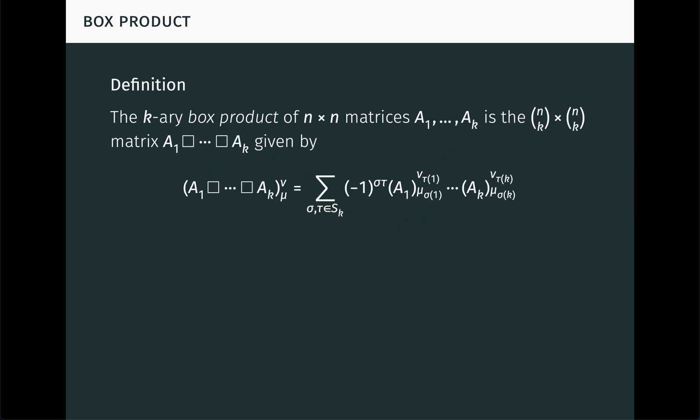The k-ary box product of n by n matrices A₁ through A_k is the (n choose k) by (n choose k) matrix A₁ ⊡ ... ⊡ A_k, with entries given by this formula. Notice this is just like the symmetric Leibniz expansion for a minor, but with the k matrices A₁ through A_k in place of a single matrix A. By construction, the box product is symmetric, or commutative. That is, we can reorder the matrices A₁ through A_k any way we want, and we get the same box product. Also, by construction, the kth compound power of A is essentially just the box product of A with itself k times. We just need to account for a factorial factor, which is a small price to pay for symmetry.